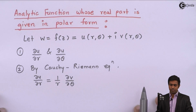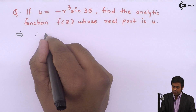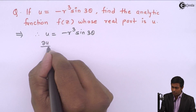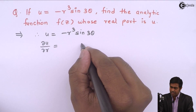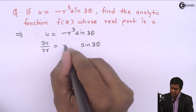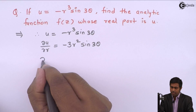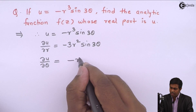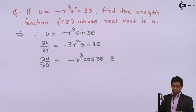From U = -R³ sin(3θ), we find ∂U/∂R and ∂U/∂θ. Differentiating U partially with respect to R: sin(3θ) stays as is and the derivative of R³ is 3R², giving ∂U/∂R = -3R² sin(3θ). Similarly, differentiating U with respect to θ: -R³ stays as is and sin(3θ) becomes cos(3θ) times 3, giving ∂U/∂θ = -3R³ cos(3θ).